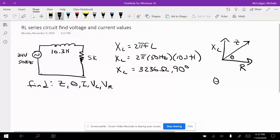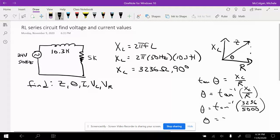So our theta, tan theta is equal to XL over R, because it's opposite over adjacent. So theta is equal to tan inverse of 3,236 over 5,000, and theta then is equal to 33 degrees.